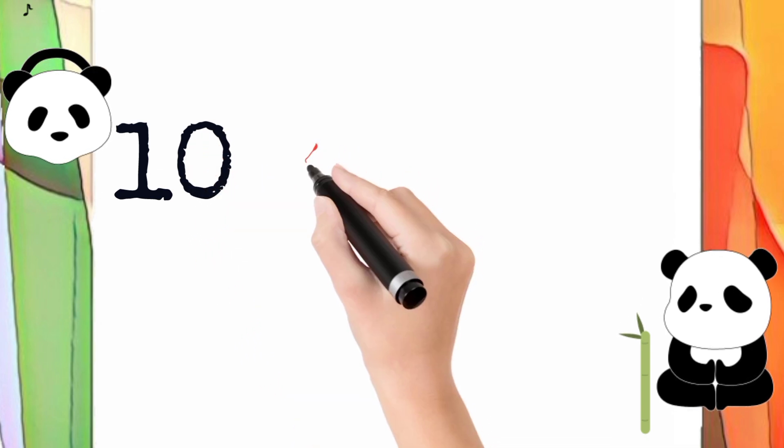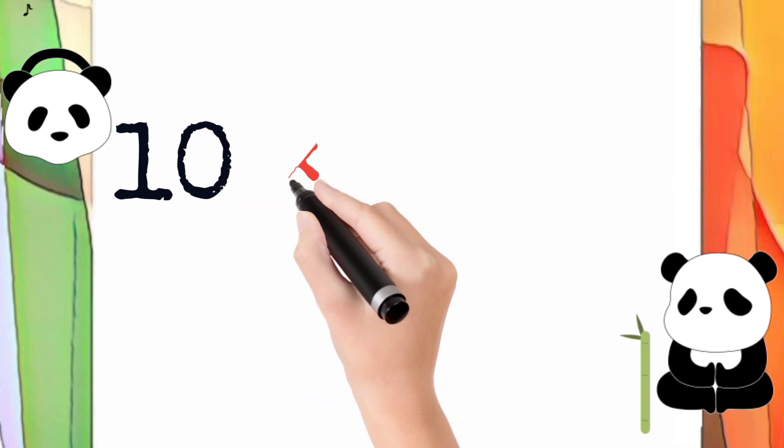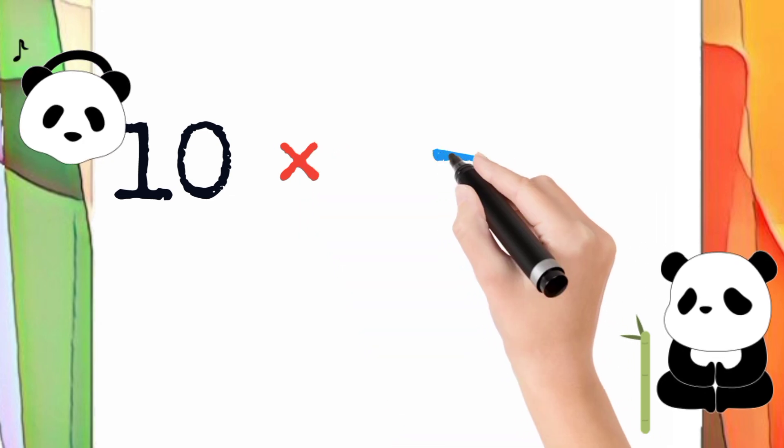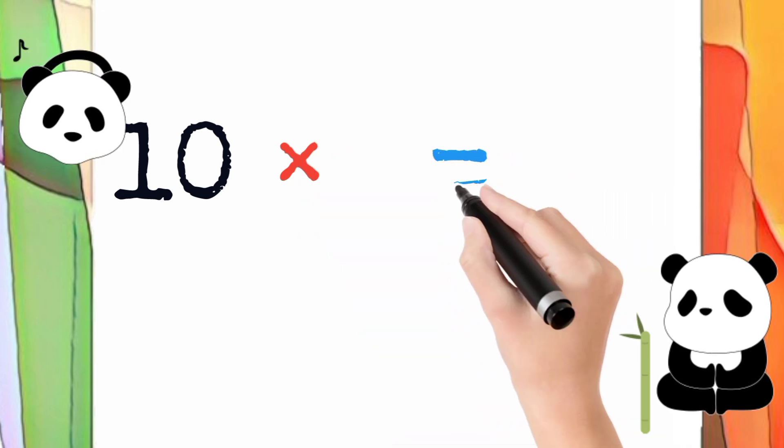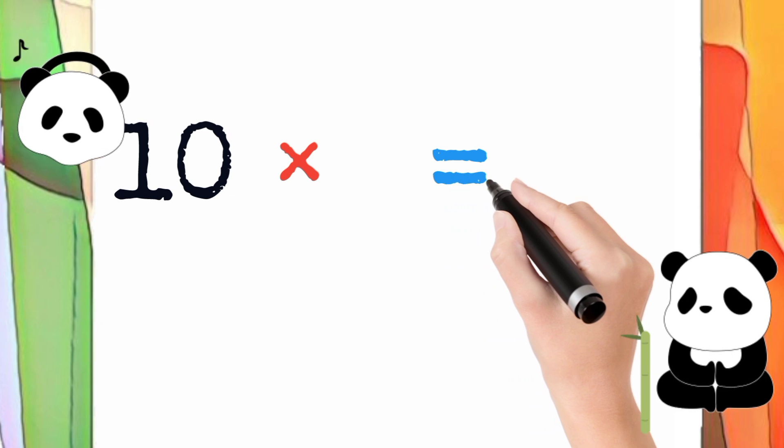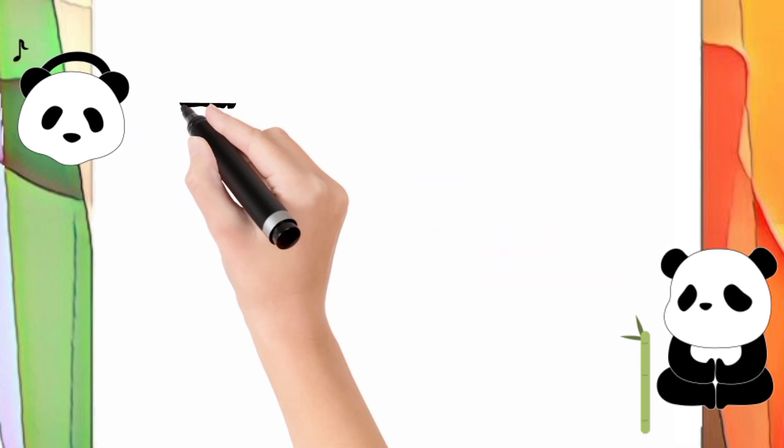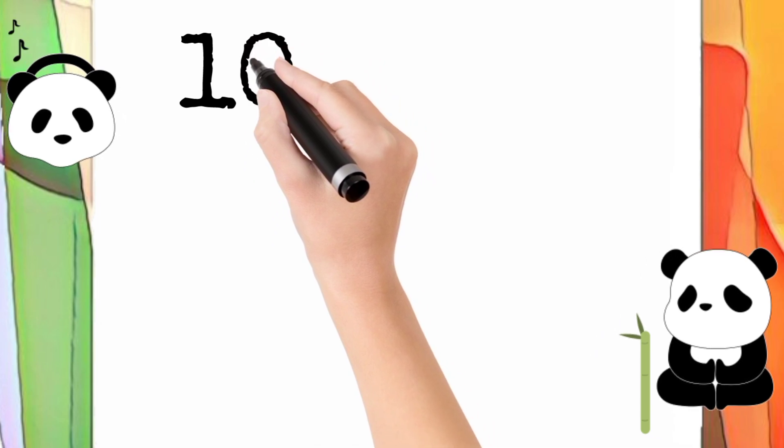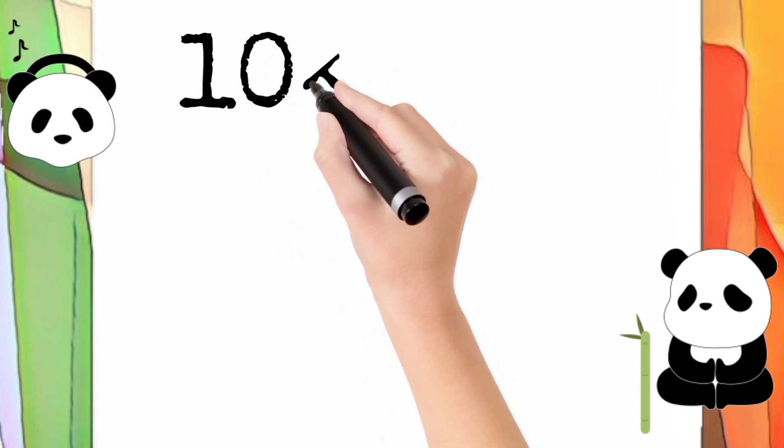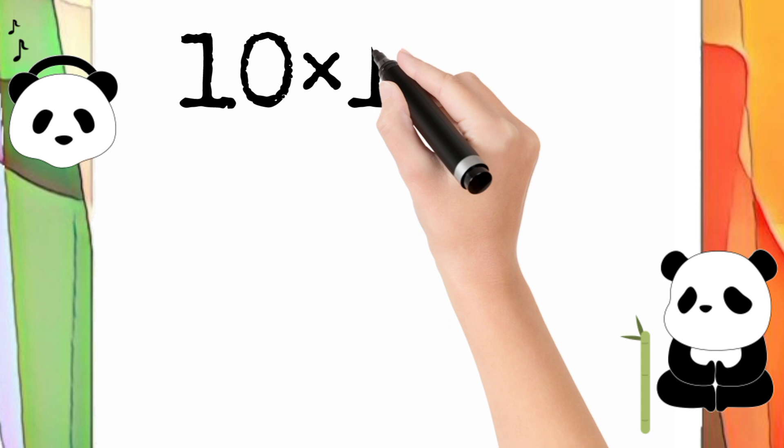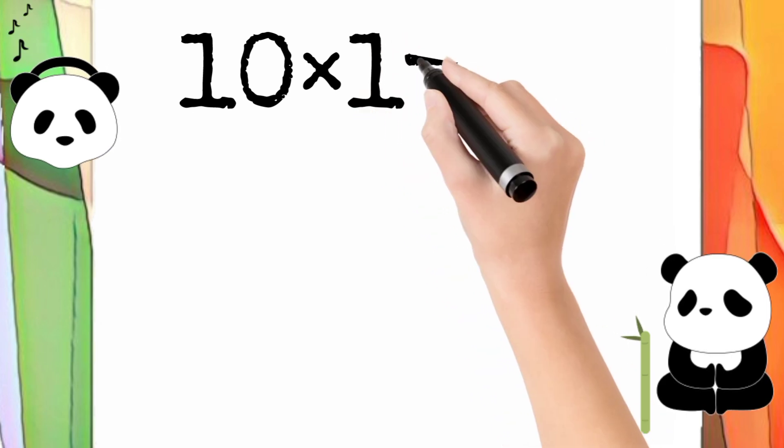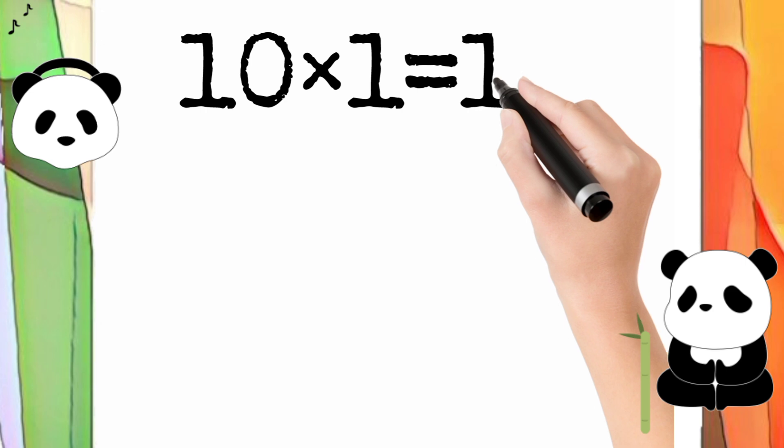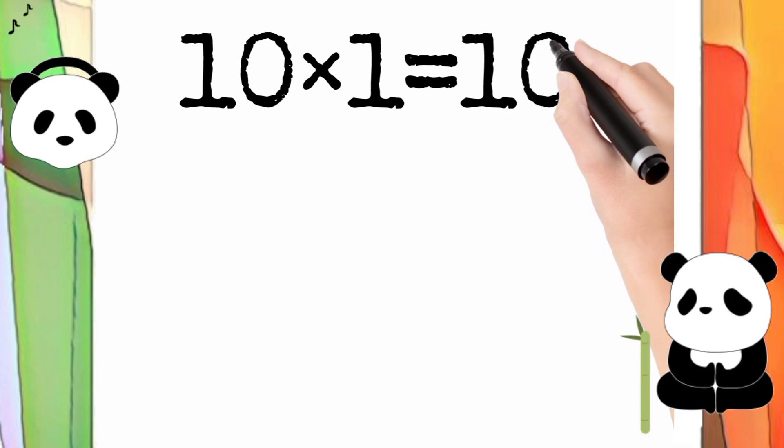This is multiplication, we also call it multiply. Now I draw an equal sign. So let's go to the table of 10. 10 multiply by 1 is equal to 10. So 10 times 1 equals 10.